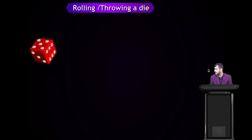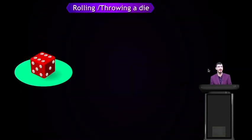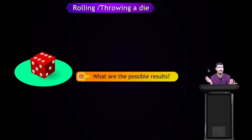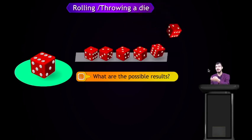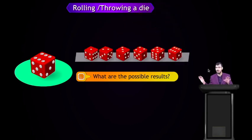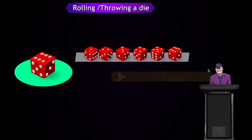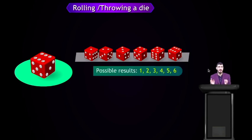Now see one more game: Game of Luck 3 — rolling or throwing a die. When we throw a die, what are the possible results? The possible results are 1, 2, 3, 4, 5 and 6 — there are 6 possible results here.